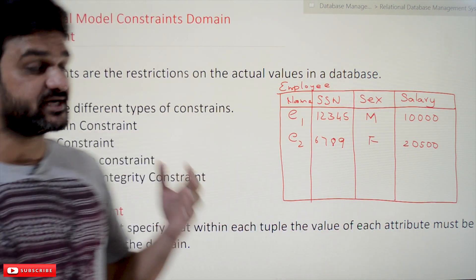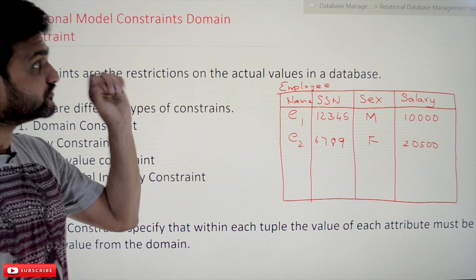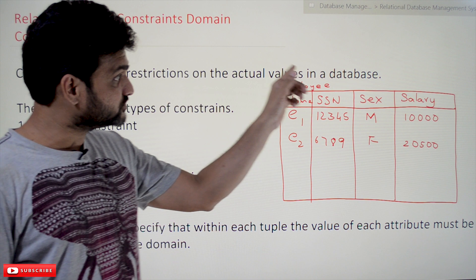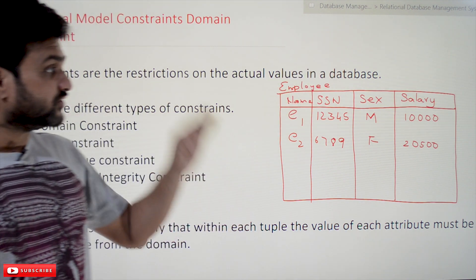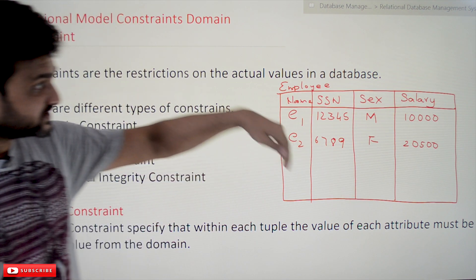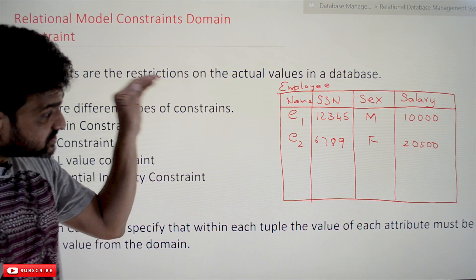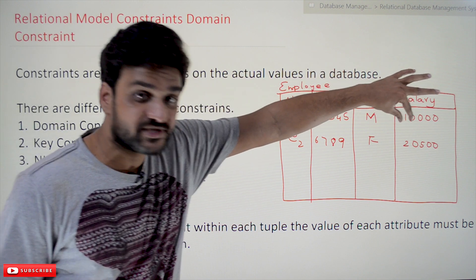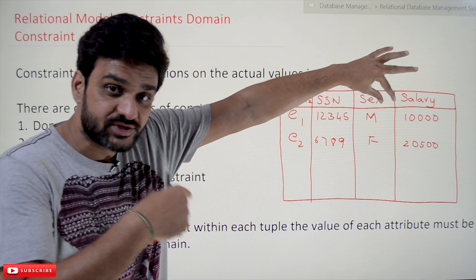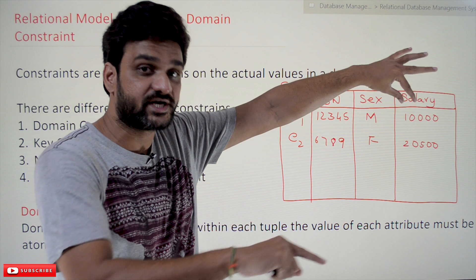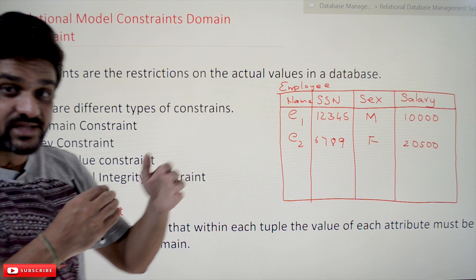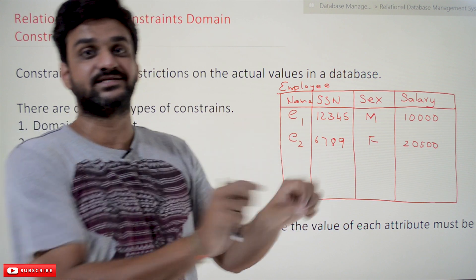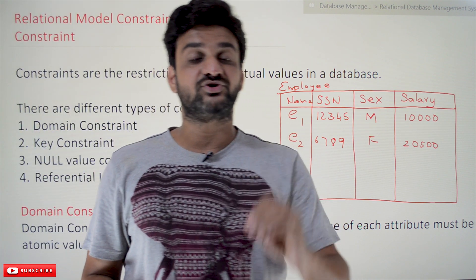Before understanding the domain concept, let's understand what is meant by a constraint. Constraints are the restrictions on the actual values in the database. For example, if you take a table in a database, the restrictions that we impose on the values being stored in that table — those are what we call constraints.